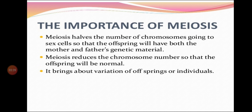Let us study the significance of meiosis. Meiosis halves the number of chromosomes going to sex cells, so that the offspring has the genetic material of both mother and father. Meiosis reduces chromosome numbers so that the offspring will be normal, and it brings about variation in offspring.